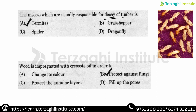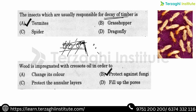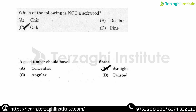We can see that if wood is placed on the ground, we need to arrange and cut it properly to prevent decay. If the wood is impregnated with creosote oil, it protects against fungi. We already know that creosote oil provides protection against fungi — this is the preservation of timber using creosote oil.